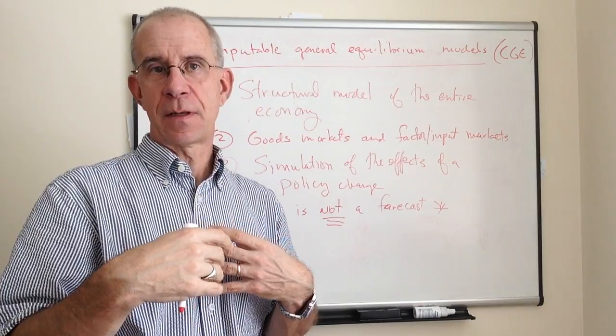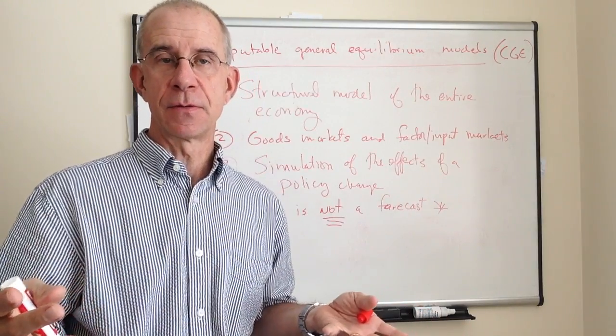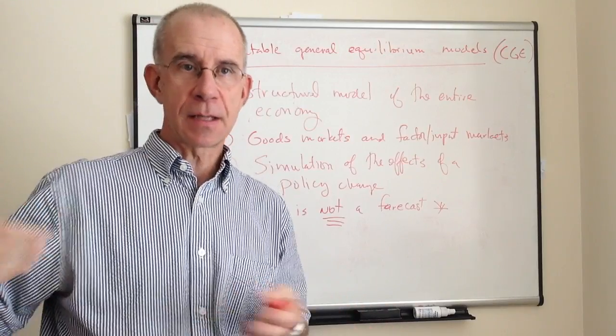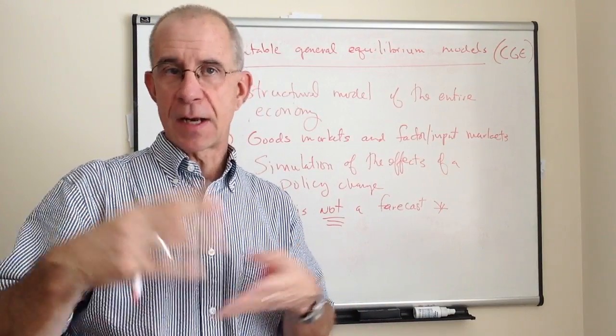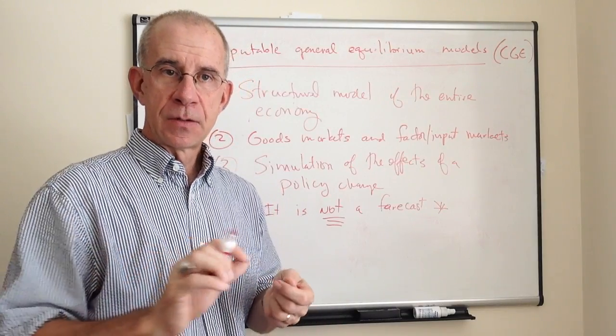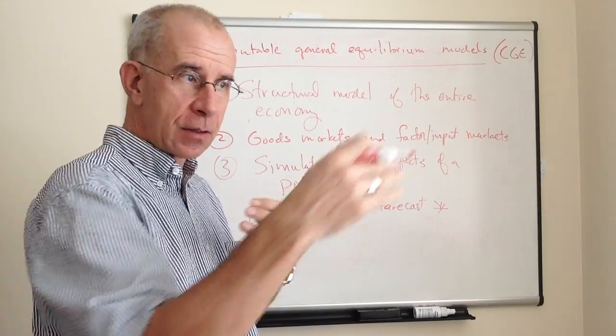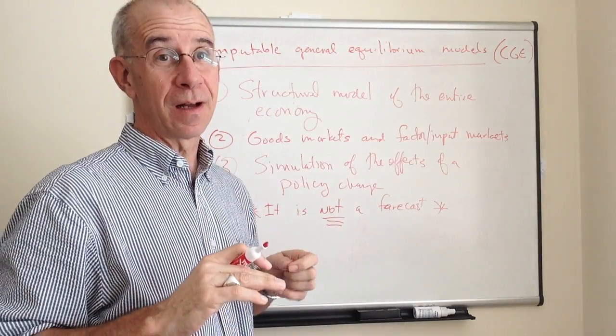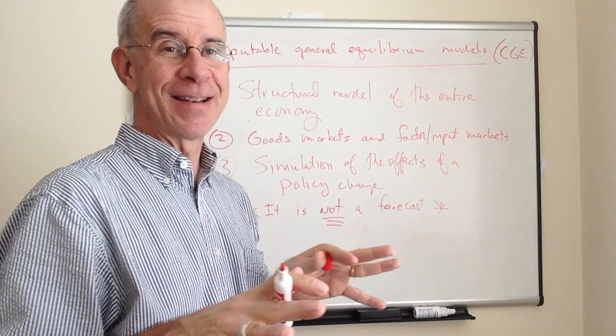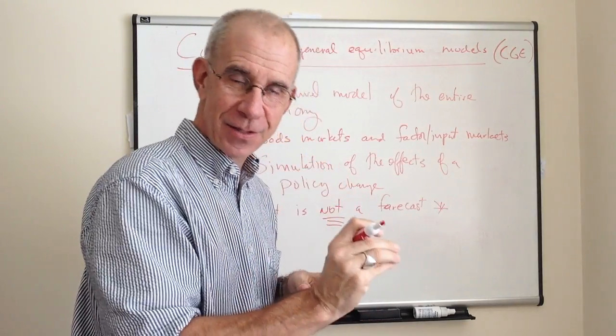If you're trying to forecast what the U.S. economy is going to be like in 5 years or 10 years or 20 years as a consequence of an agreement like the Trans-Pacific Partnership, you change the trade policy and then you go forward 15, 20 years. Well, you know, there are a lot of other things that are changing, not just that one policy change.